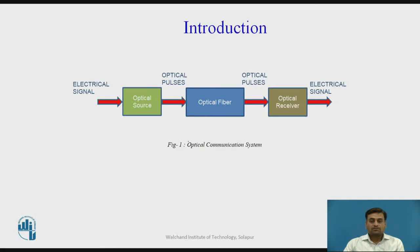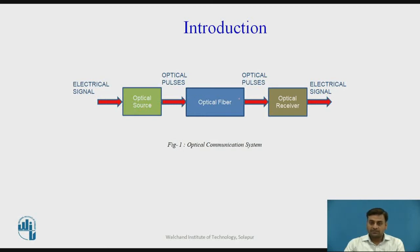In this figure you can see the generalized optical communication system diagram, which has three major components: optical source, optical fiber used for the transmission of the light signal, and optical receiver. We have already covered optical sources — those are LED, laser, and injection lasers. An electrical signal is fed to the optical source, which converts it into optical pulses that are transmitted through the optical fiber to the destination. On the destination side, these optical pulses are converted back into an electrical signal by the optical receiver. This optical receiver has a fundamental component which is the optical detector — the area of interest for us in this session.